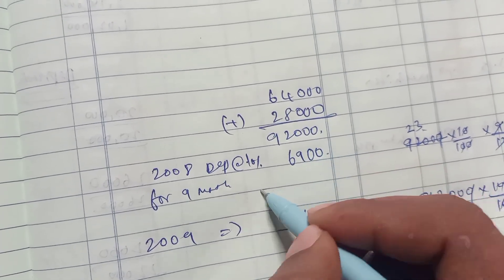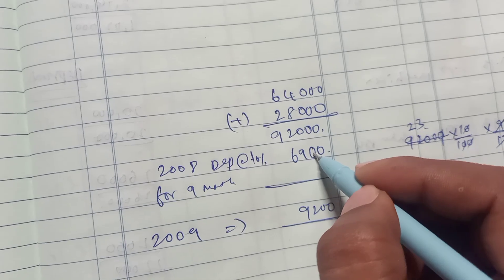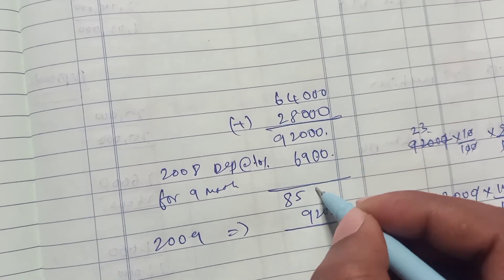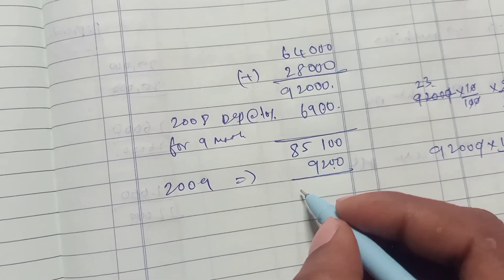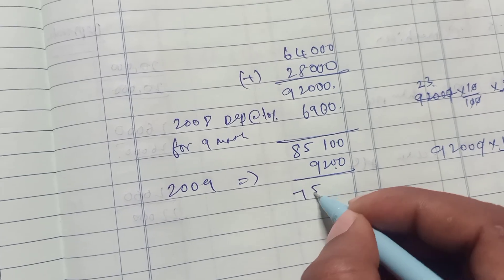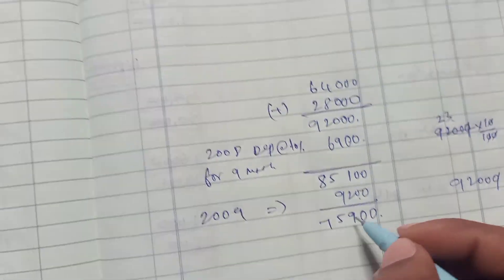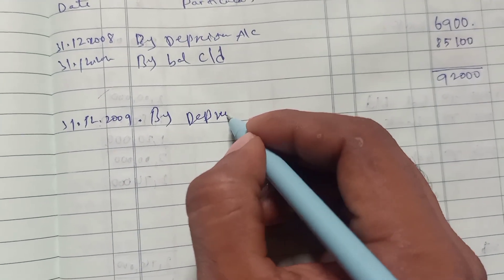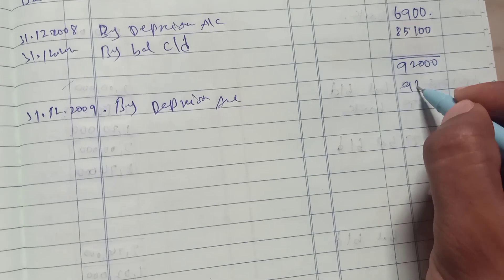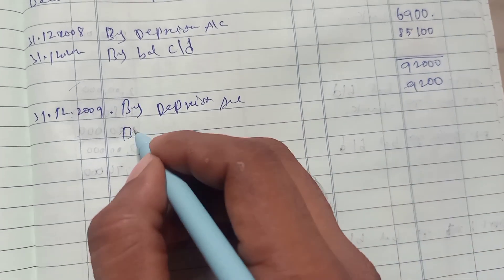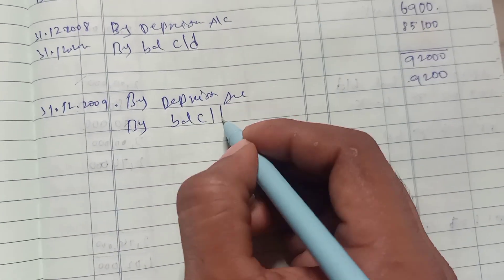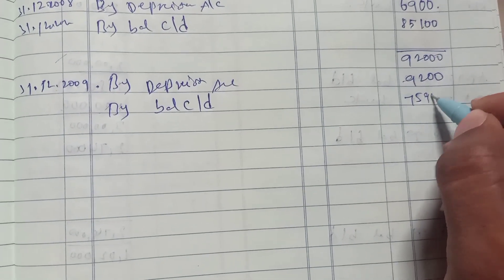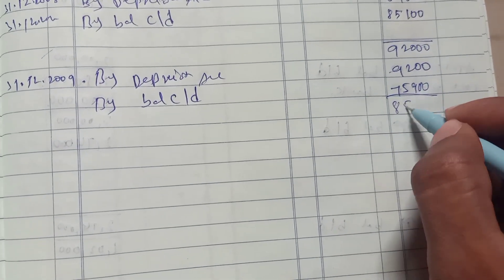Balance: $85,100 minus current year depreciation of $9,200, balance is $75,900. By depreciation account $9,200, by balance carried down $75,900, total $85,100.